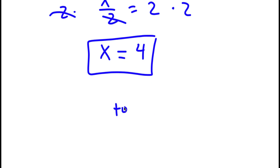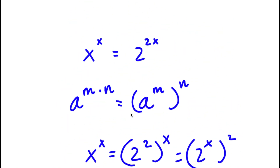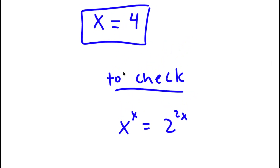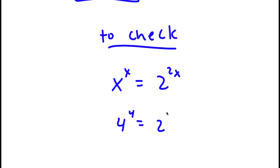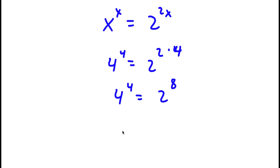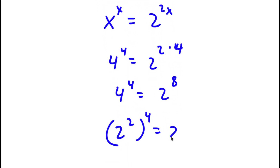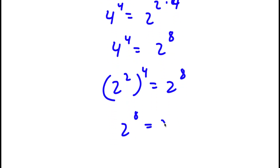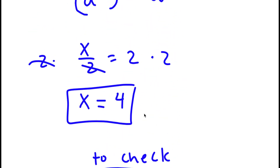To check: my original equation was x to the power of x equals 2 to the power of 2x. Substituting x equals 4, I have 4 to the power of 4 equals 2 to the power of 8. Now 4 is the same thing as 2 squared, so 2 squared to the power of 4 equals 2 to the power of 8, and 2 times 4 is 8 — so 2 to the power of 8 equals 2 to the power of 8. Because this is right, my solution is right.